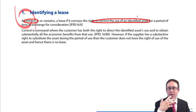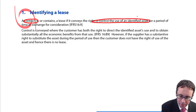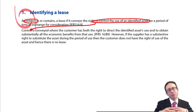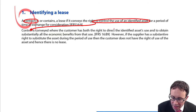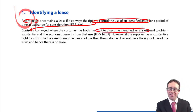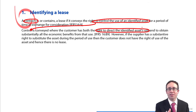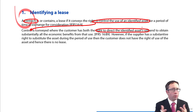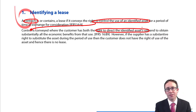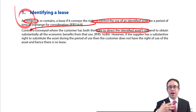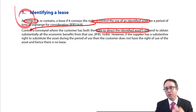The standard then goes on to add a little more detail about what we mean by control. This is what I really like about the standard — it brings in the word 'control' by talking about whether or not we have the right to direct the identified asset's use. So can we specifically dictate how that asset is used, when that asset is used, what that asset is used for? Thinking about groups — we spoke about control as being the power to direct the activity. So if you direct the identified asset's use, you have control. If you have control, you're going to have a lease, and you account for it under IFRS 16.